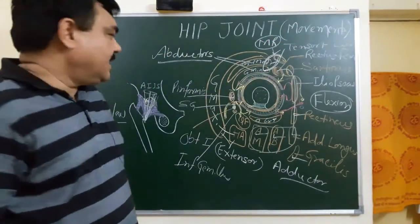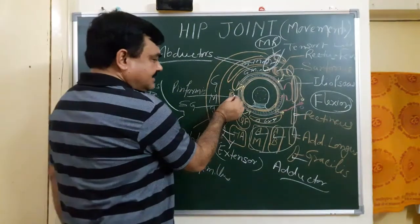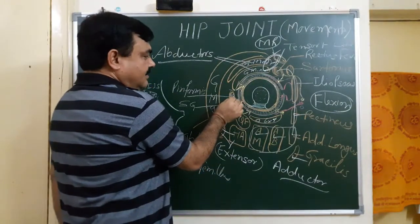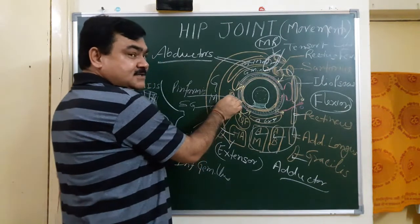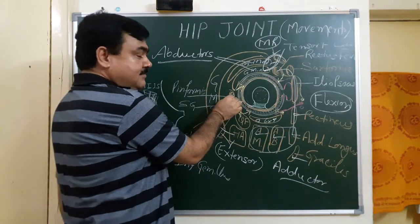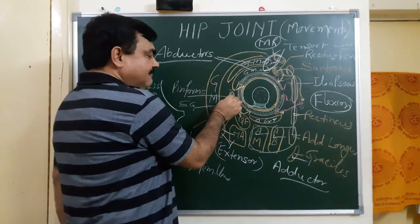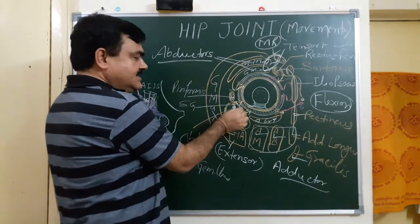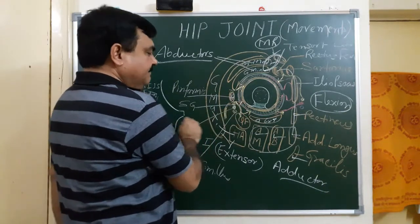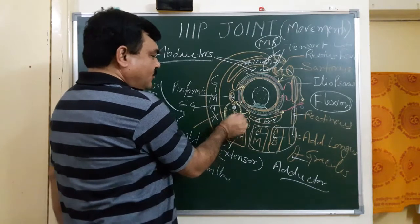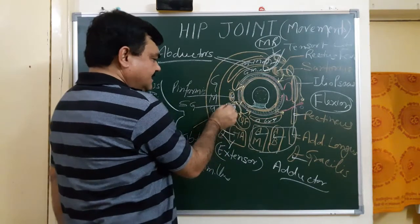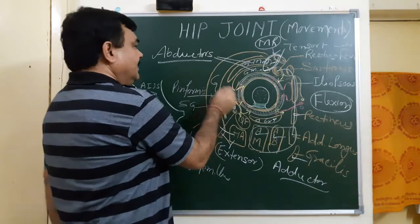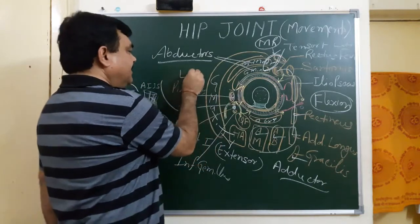The lateral rotators are piriformis, superior gemellus, inferior gemellus, obturator internus, quadratus femoris, and some part of gluteus maximus.